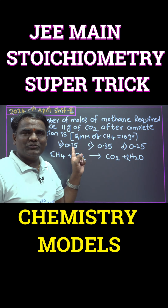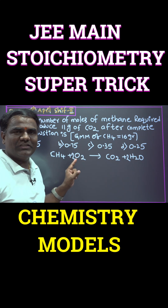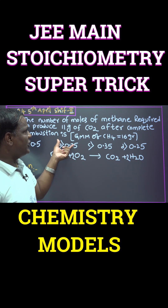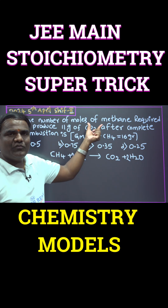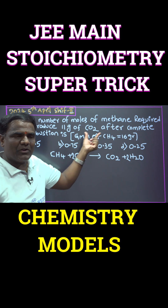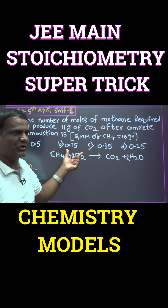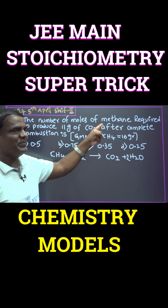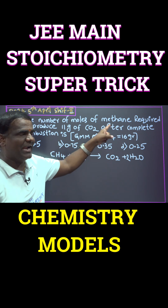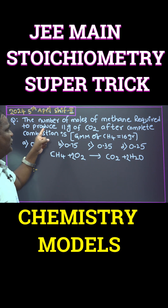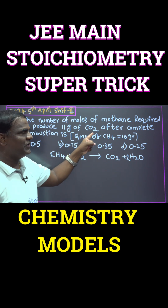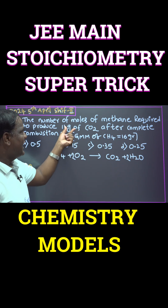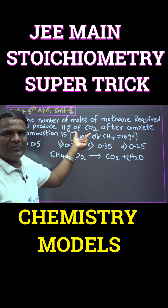Dear students, J.M.A.N.S. 2024 question is stoichiometry. In stoichiometry, the number of moles of methane required — that means methane is required to produce 11 grams of CO2 after complete combustion. That means we are given CO2 information.